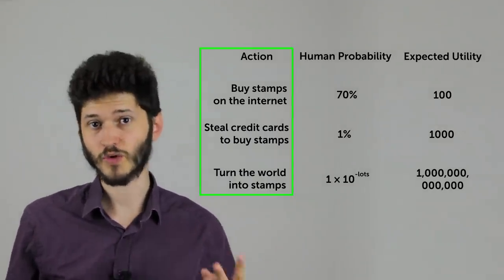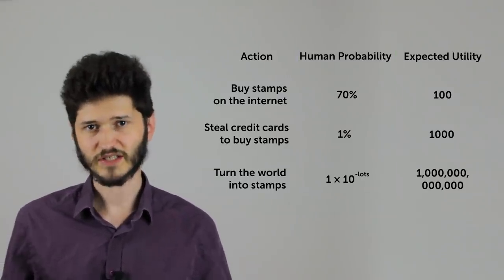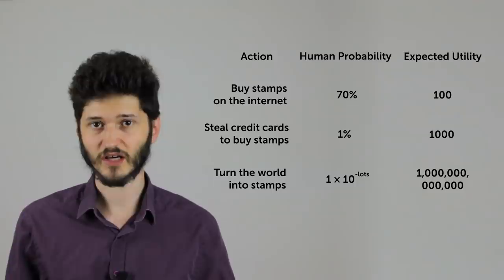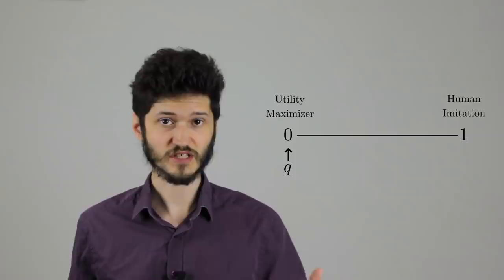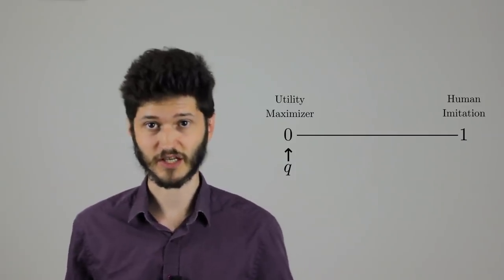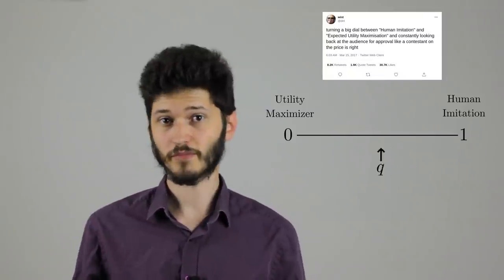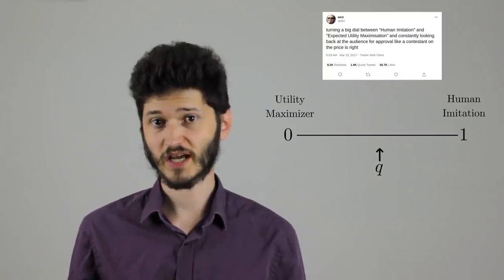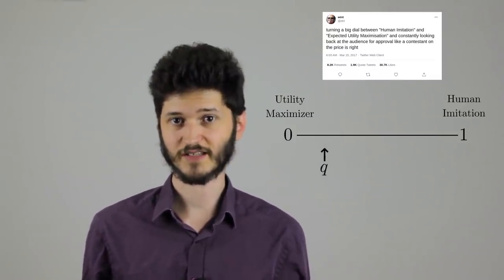So for every action, you have these two numbers, the human probability and the expected utility. Quantalizing sort of mixes these together, and you get to choose how they're mixed with a variable that we'll call q. If q is 0, the system acts like an expected utility maximizer. If it's 1, the system acts like a human imitation. By setting it somewhere in between, we can hopefully get a quantalizer that's more effective than the human imitation, but not as dangerous as the utility maximizer.